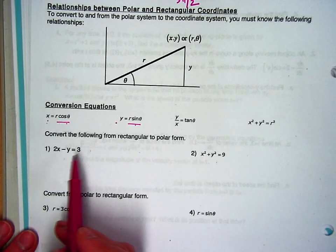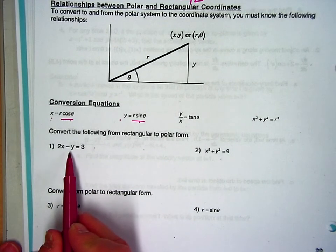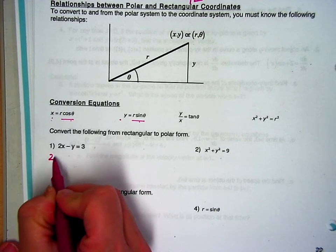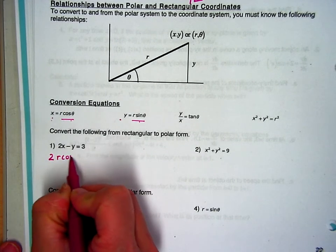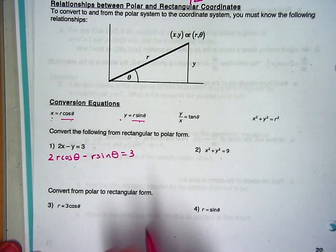Okay, so if I want to go from rectangular form to polar form, I don't want any more x's and y's, I want everything to be r's and thetas now. So I'm just going to replace the x with r cosine, replace the y with r sine.